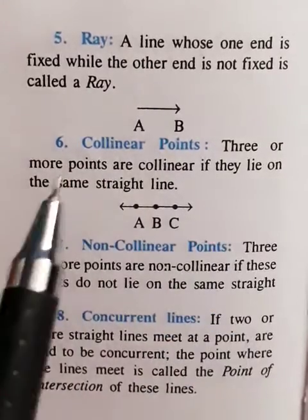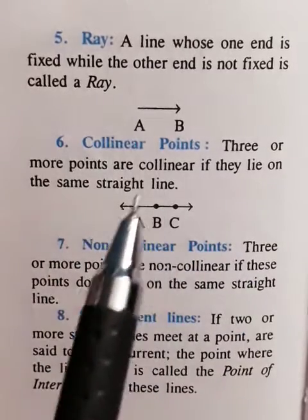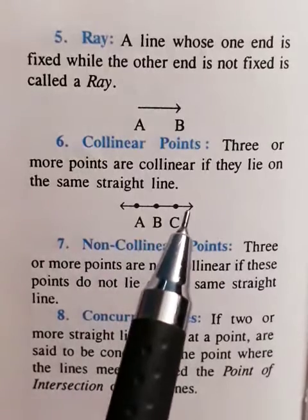Collinear point: three or more points are collinear if they lie on same straight line. ABC is a collinear point, it lies on the same straight line.